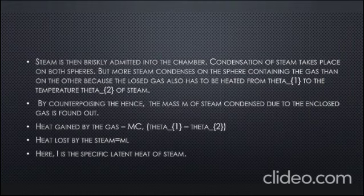The initial temperature θ1 of the gas is noted. Steam is briskly admitted into the chamber. Condensation of steam takes place on both spheres, but more on the sphere containing the gas than the other, because the enclosed gas also has to be heated from θ1 to the temperature θ2 of steam. By counterpoising, the mass M of stream condensed due to the enclosed gas is found out.